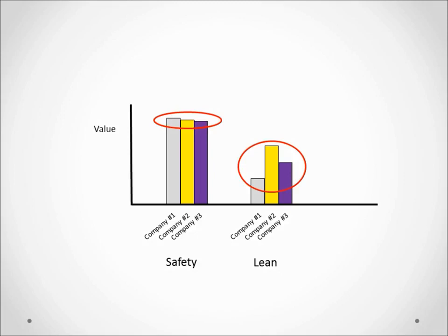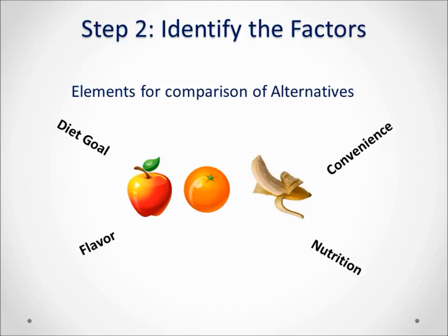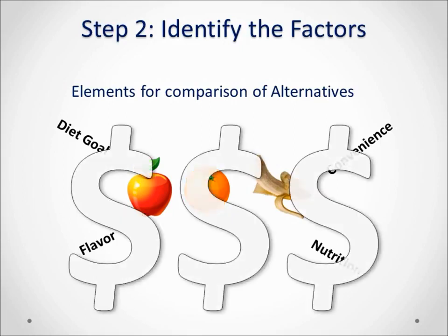For our exercise we will use diet goal, flavor, nutrition, and convenience as factors. In practice, the selection of factors will require significant discussion among stakeholders as part of the process. Now someone is bound to ask: what about cost — why isn't that one of the factors?